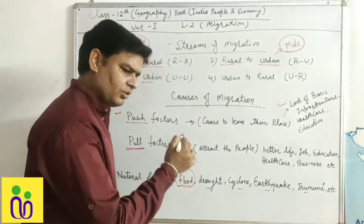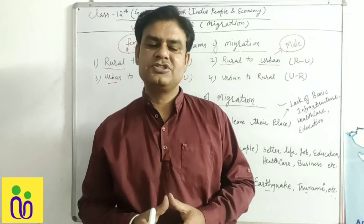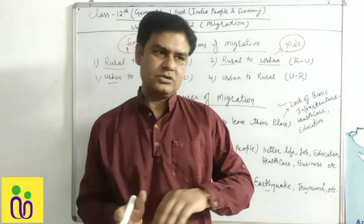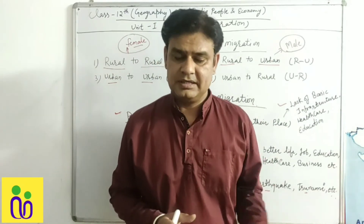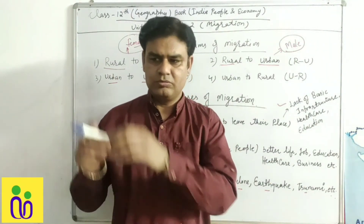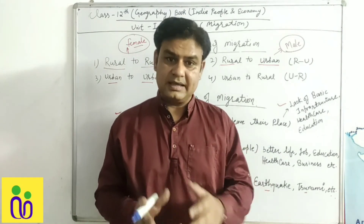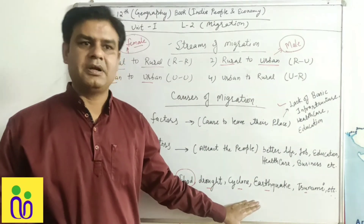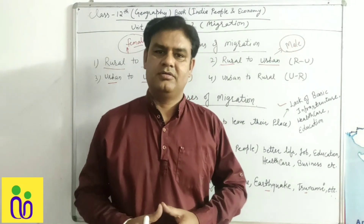मान लीजिए कोई एक area है जहाँ पे flood हो गया। Flood हो गया तो उस person का shelter भी चला गया, food facilities भी नहीं मिलेंगी, jobs तो natural सुविधाएँ चली गईं। So वो person किसी दूसरे area में move करेगा — better shelter, better food facilities, job के लिए। Same for example earthquake — जिस building में था वो destroy हो गई। So again shelter नहीं रहा और वो natural factor के कारण migrate करेगा। ये कुछ natural factors हैं जो किसी person के migrate होने में role play करते हैं। Next video में rest part देखेंगे। Thank you!